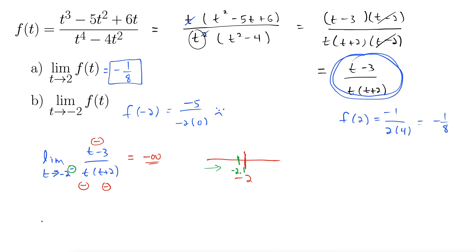So now let's see what happens as we approach negative 2 from the right, from the positive direction, so from the right, we still have the same function, t minus 3 over t times t plus 2.